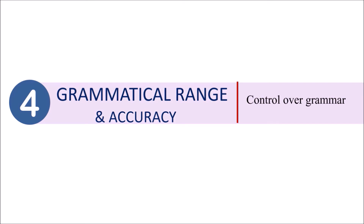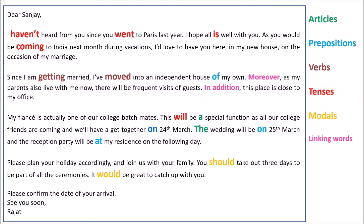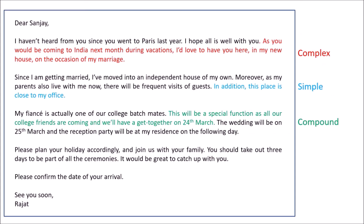Let's talk about grammar — probably the hardest thing about the English language. Here the examiner evaluates your control over grammar and how accurately you've used it. The model letter uses articles, prepositions, verbs, tenses, modals, linking words, and different grammatical structures. The examiner also looks at the range of sentence types — you should use a mixture of simple, compound, and complex sentences. Your punctuation — commas, full stops, exclamation points — should also be correct.